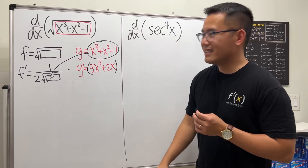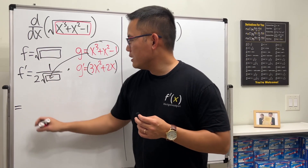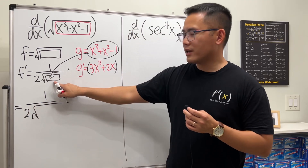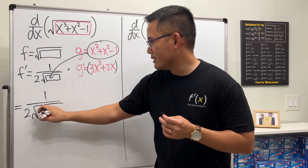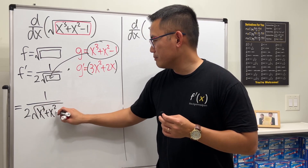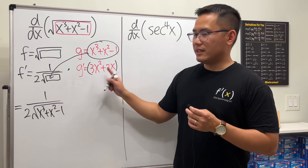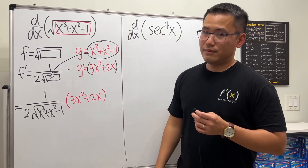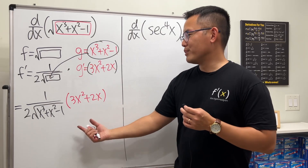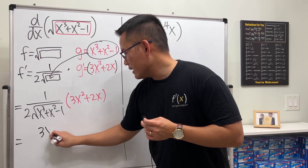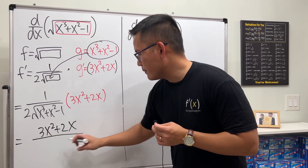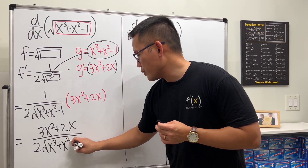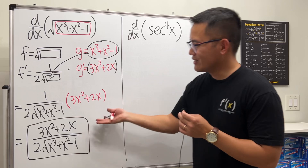So the derivative is going to be one over two square root of (x³ + x² − 1), times (3x² + 2x). Of course you can put that on top, so we write (3x² + 2x) over 2√(x³ + x² − 1), and we are done.